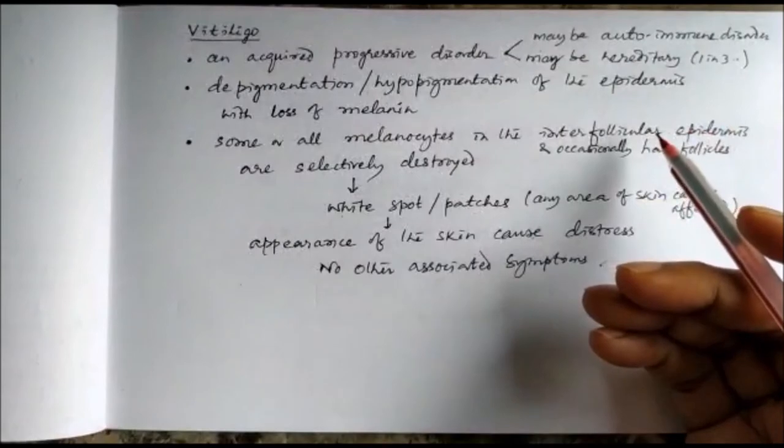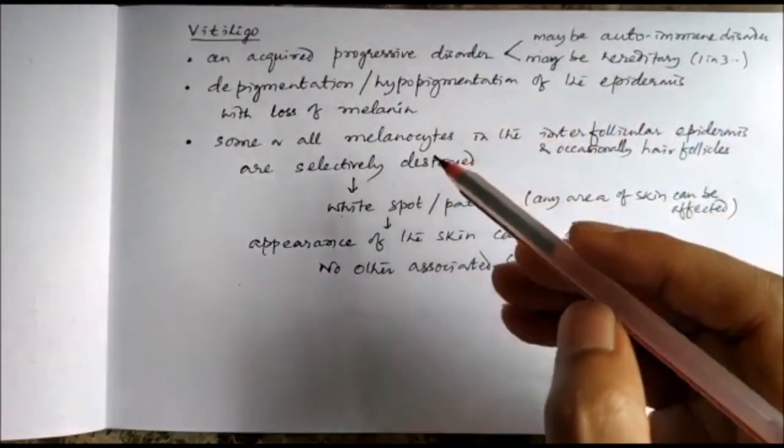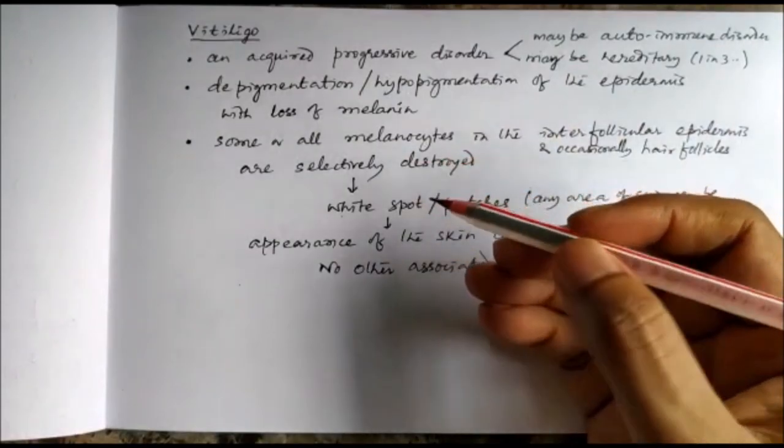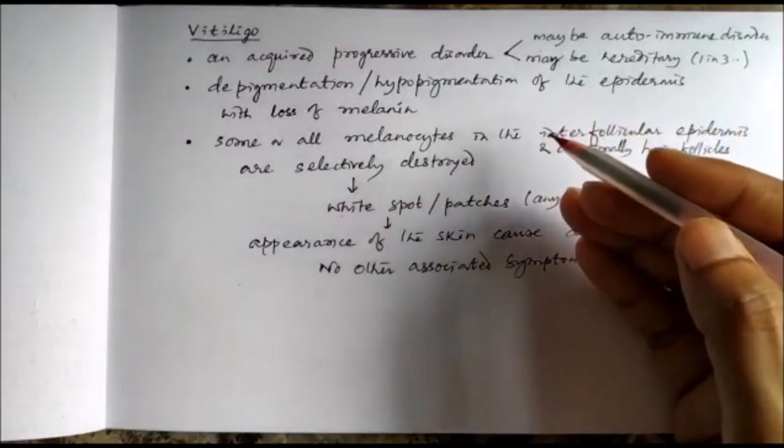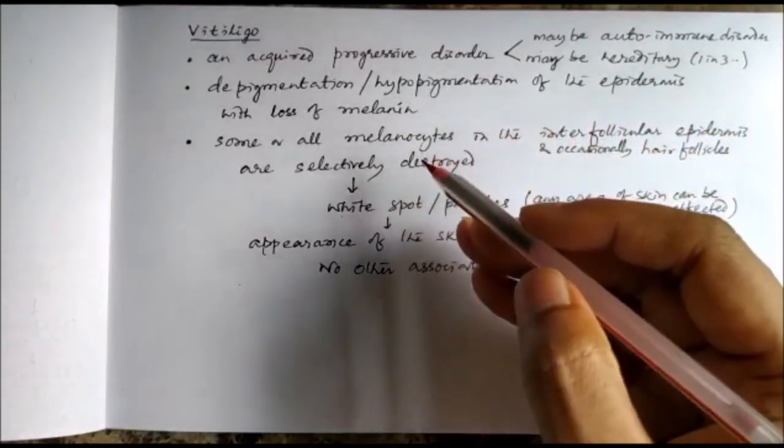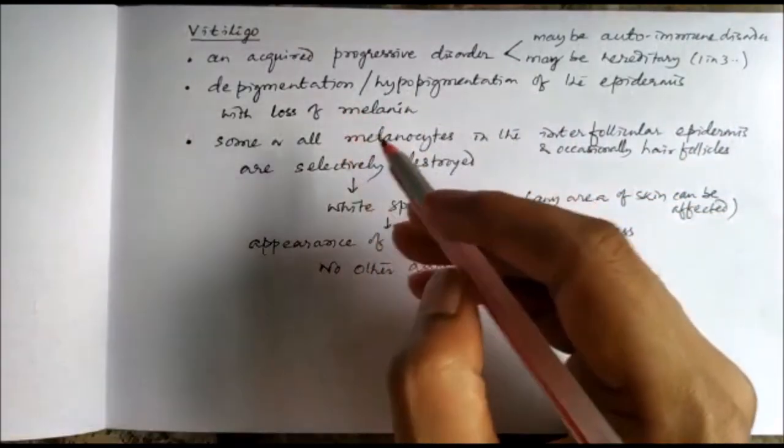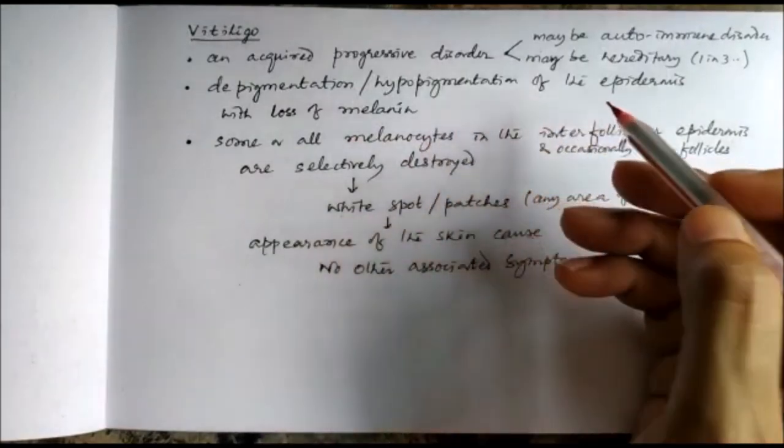Vitiligo is an acquired progressive disorder, and the causes may be autoimmune disease or maybe sometimes hereditary. One in three patients have a family history of vitiligo. What happens in vitiligo is there is hypopigmentation or depigmentation of the epidermis.